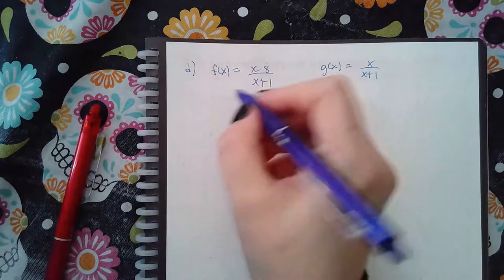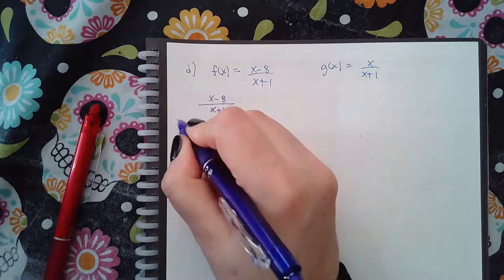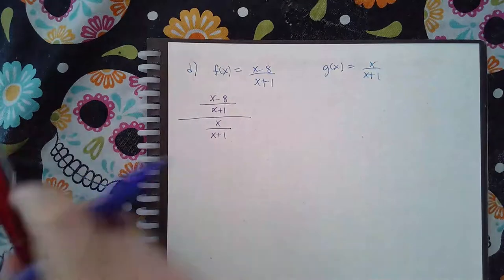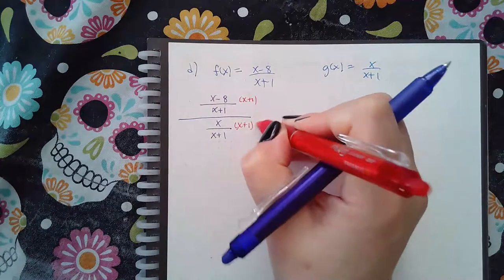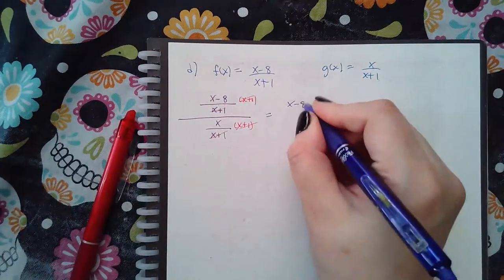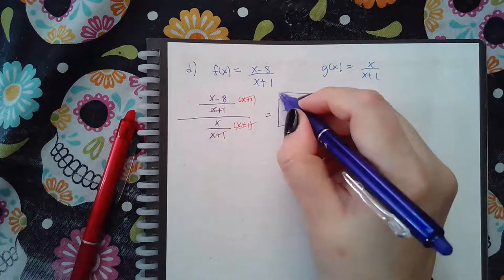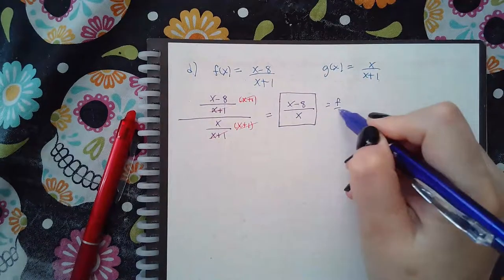To find f over g, we're going to do x minus 8 over x plus 1 over x over x plus 1. So if I multiply by the common denominator x plus 1, we end up with the expression x minus 8 over x. Now this cannot be simplified any further, so that's what you'll type in the box for f over g.